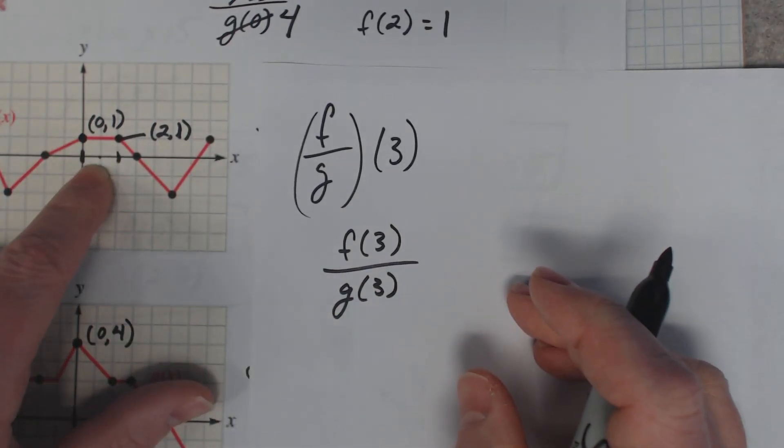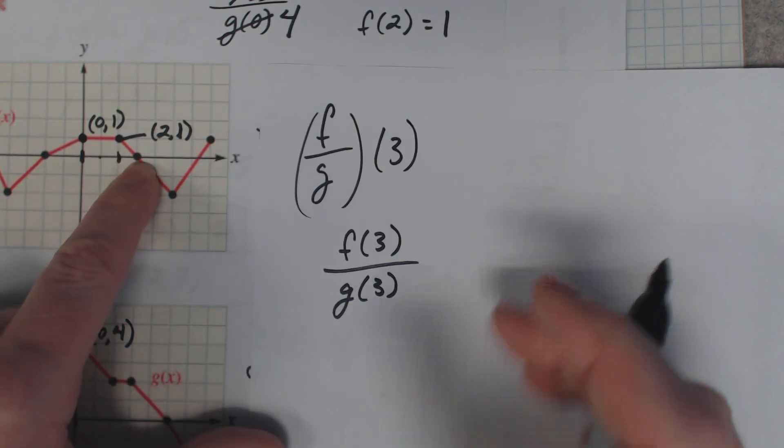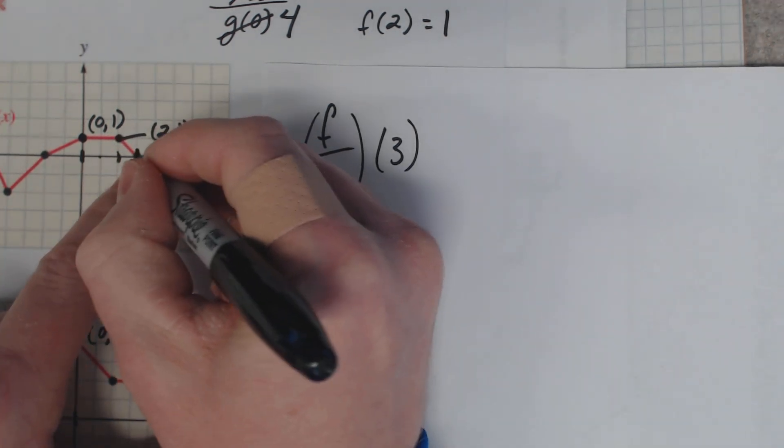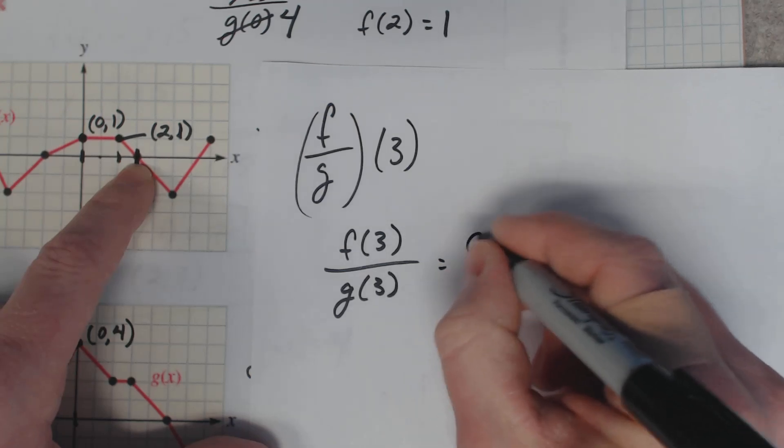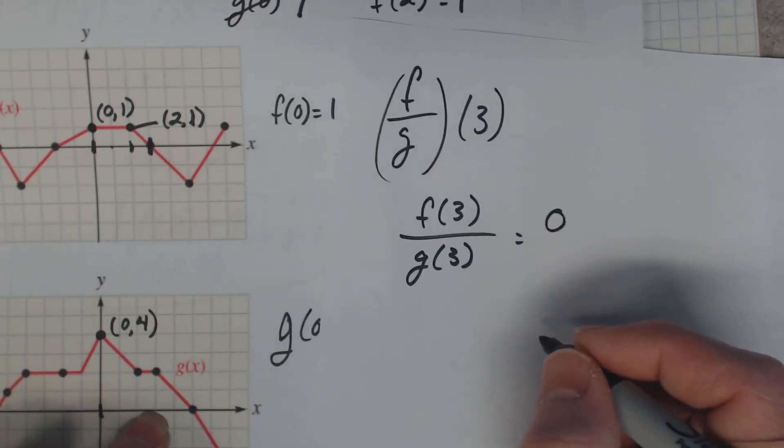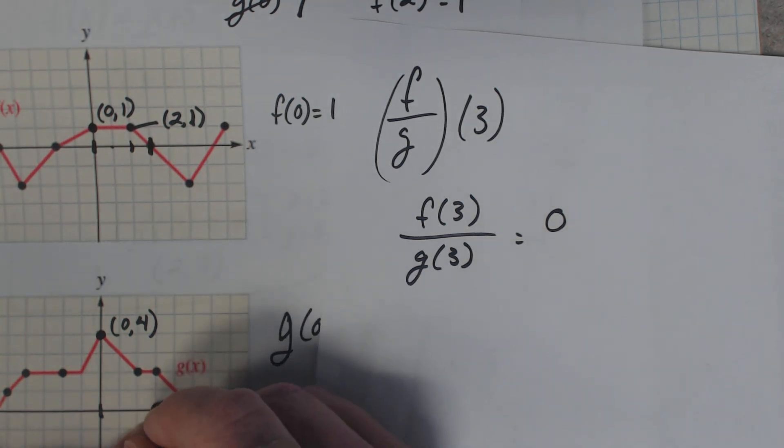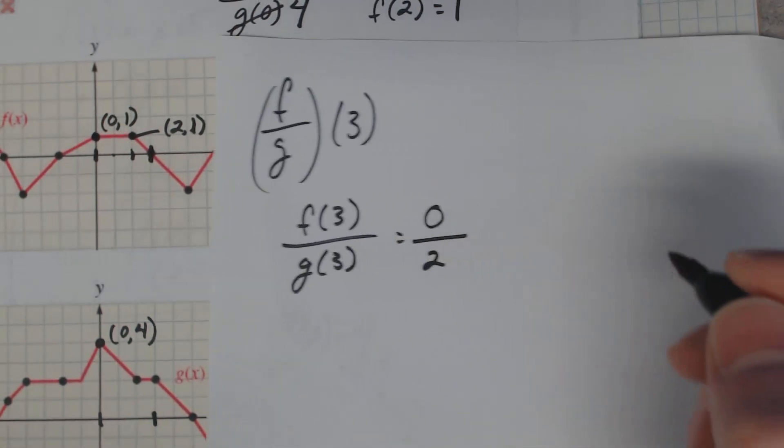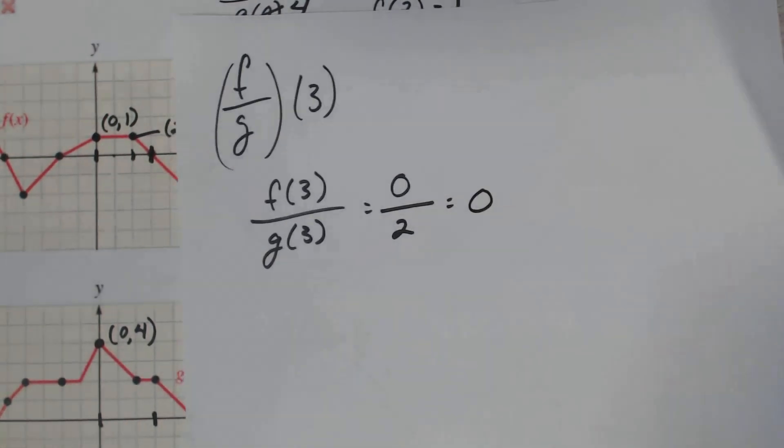Well, here's your function f. We'll go over here to 3. What is it? 0. Here's where the x value is 3. The y value is 0. g(3)... 1, 2, 3. There's the x value of 3, and that correlates to a y value of 2. And 0 divided by 2 is 0.